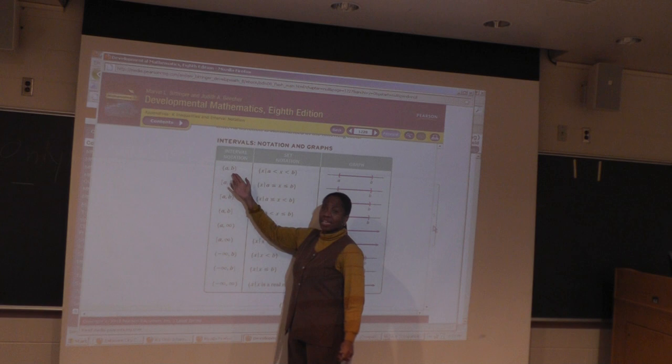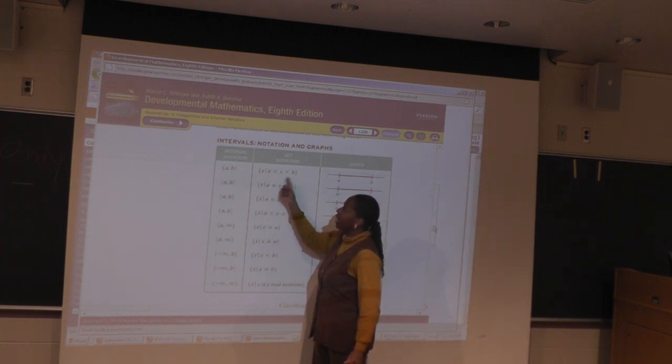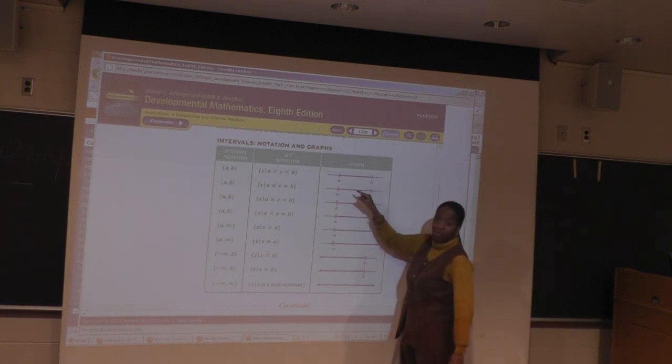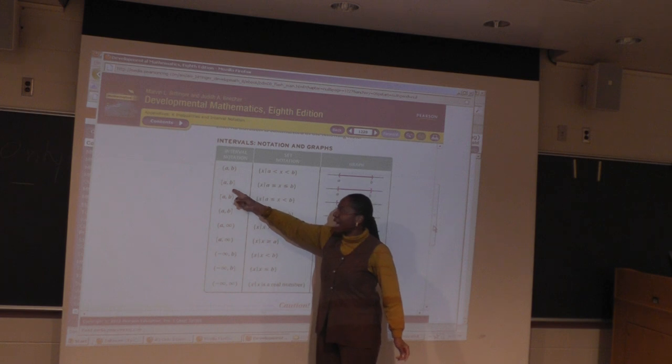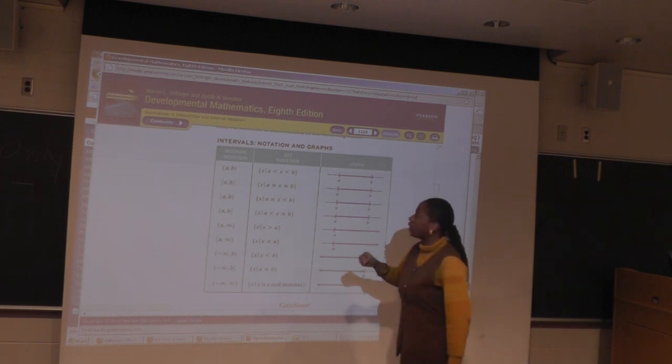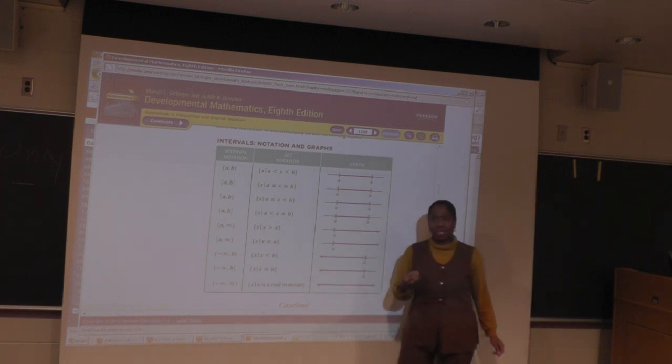So this is an interval. This is how you would write it in set notation. And then this is how you do the graph. Again, the graph has parentheses at the endpoints. In this case, we have, what is that called again? Right. We have a bracket. What do brackets mean? It's included.